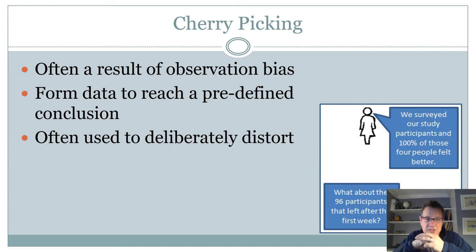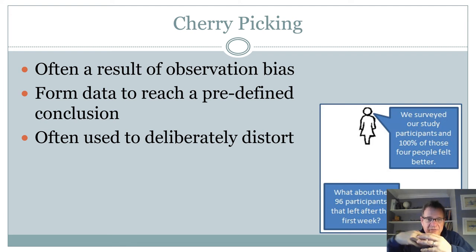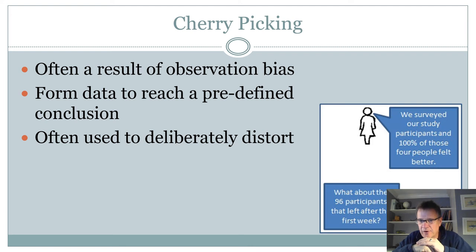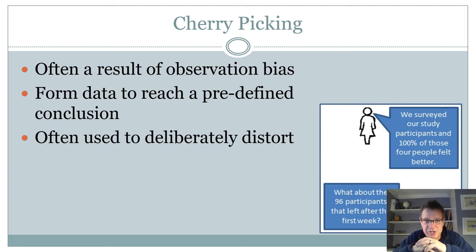Cherry picking is often the result of observation bias. We basically form data to reach a predetermined conclusion. For example: a study reports that 100% of those surveyed felt better — but what about the other 96% we didn't hear from, or who may have left? You're ignoring a large portion of the information to come out with a result you want.